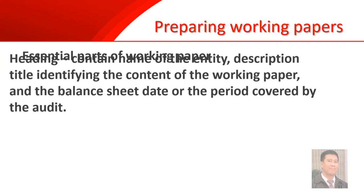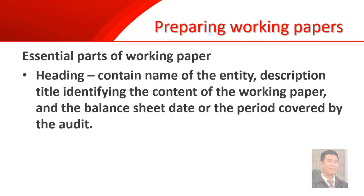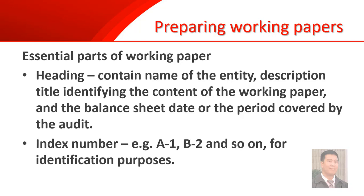In preparing working papers, we have these essential parts. The first one is the heading, which should contain the name of the entity, description or title of the content of the working paper, and the balance sheet date or which period it's covering. The next part is the index number, which works like a page number used as a reference when you do other audit work. An example would be A-1 or B-2, and so on. It's up to how the auditor decides on the indexing.